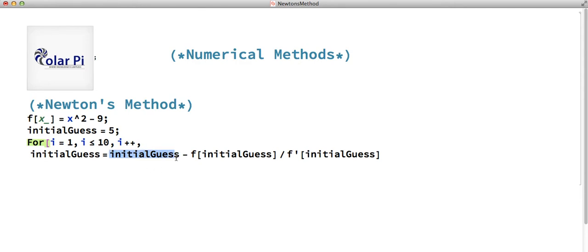So initial guess is x1. So it makes sense that I have x1 minus F of x1 divided by F prime of x1, because that's consistent with the formula that we came up with in the theory video.